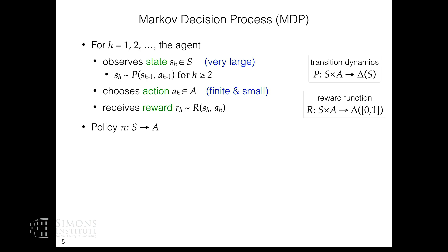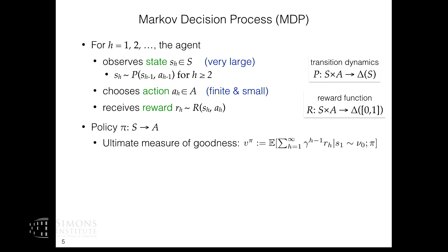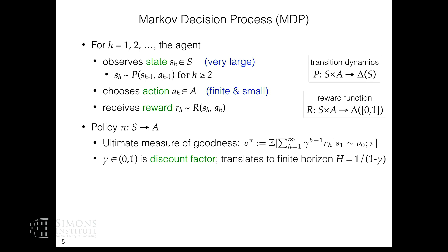Ultimately, what you want is to find a policy π that maps states to actions. The measure of goodness of a policy is the scalar discounted sum of rewards in expectation when you follow this policy starting from some given initial state distribution ν_0. The discount factor γ translates how long the decision making is or how many time steps you need to finish an episode.